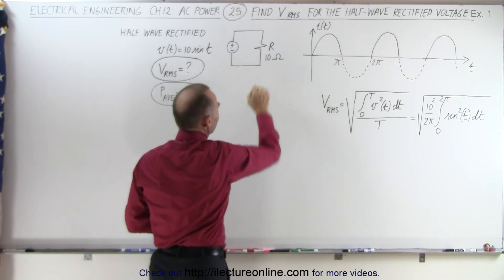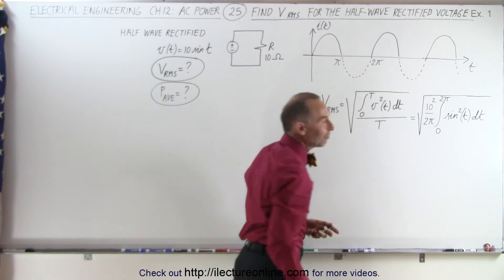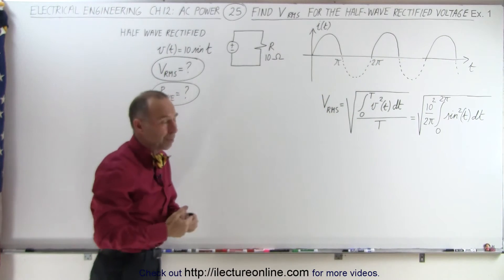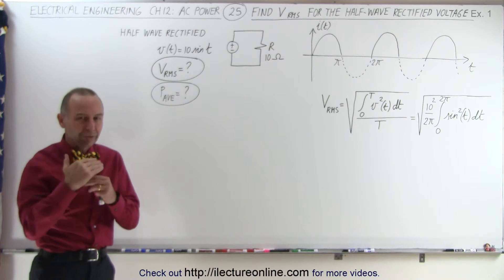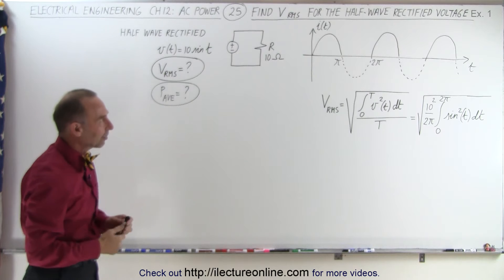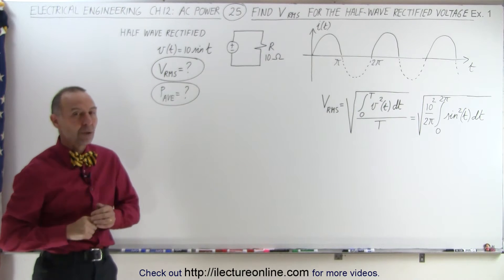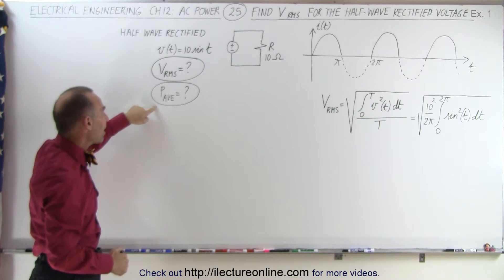We have a resistor there of 10 ohms on the circuit, and you can see how we only allow the positive portion of the voltage to go through. We probably have some sort of diode there. We ignore the small diode effect on the voltage, the voltage drop across the diode effect, and let's say that that's the waveform that we have. Now we're trying to find the RMS voltage and the average power.